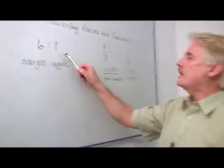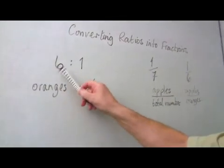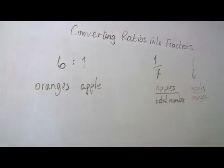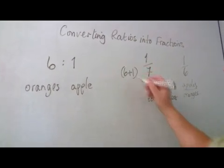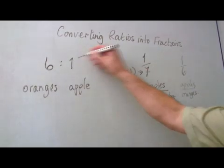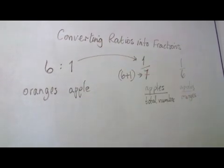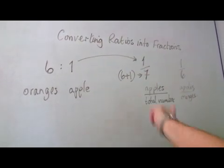So this is why here, when I say oranges and apples, 6 plus 1 is 7. So that 6 plus 1 is giving my 7, and the 1 is the fraction of apples.